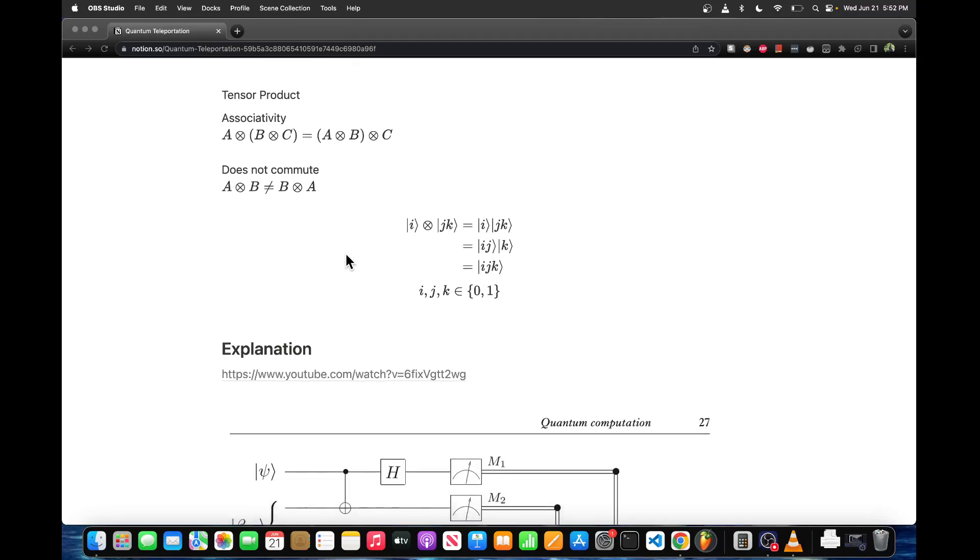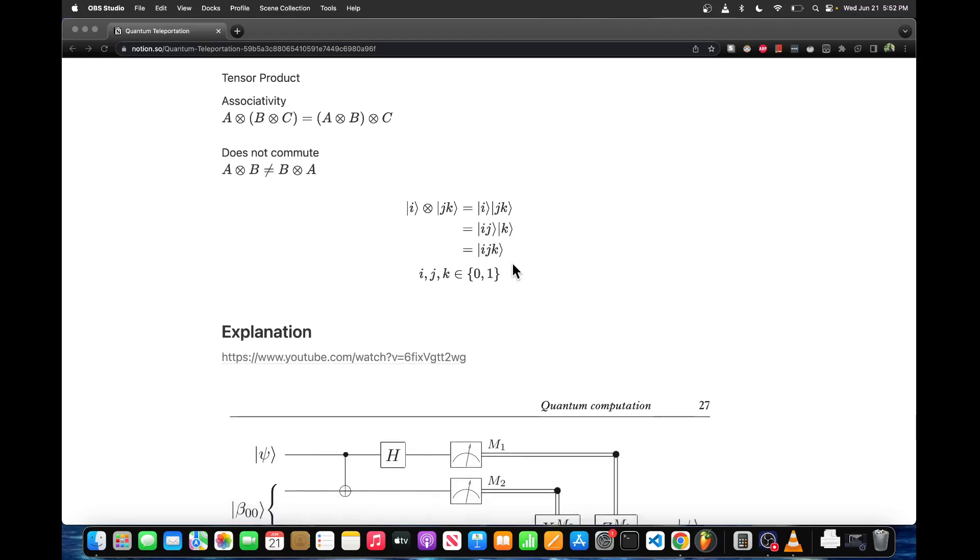For our notation, suppose we have three qubits where i is q0, j is q1, and k is q2. If we want to represent the overall system we could write it as a tensor product, but usually we're going to drop the product symbol and this becomes an implied tensor product. Then using the associativity rule we can group these together however we want.